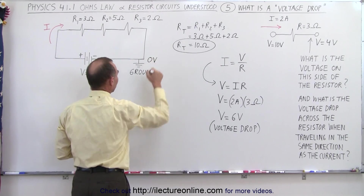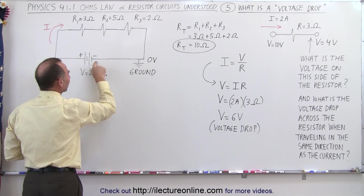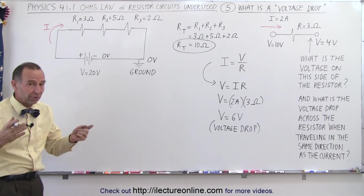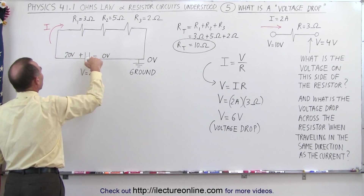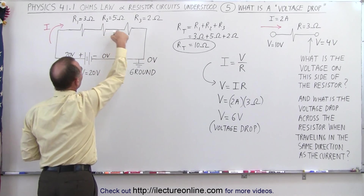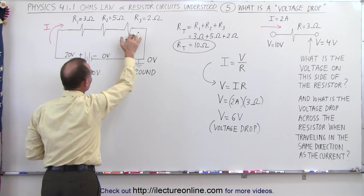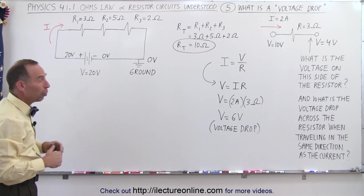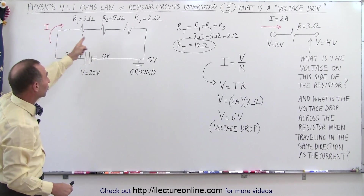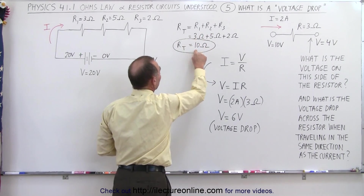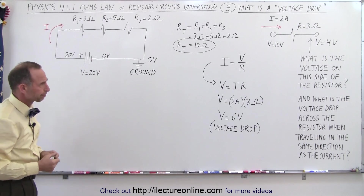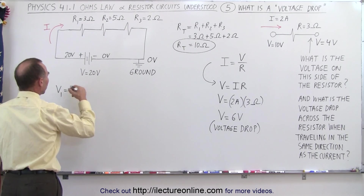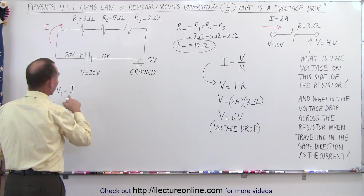The circuit at this point is at 0 volts. Since this is a 20 volt battery and the right side is connected to ground at 0 volts, the left side of the battery will be at 20 volts. As current flows through the three resistors, there will be a voltage drop across each one and by the time we get back to ground the voltage should be zero. The equivalent resistance of three resistors in series is found by adding them, giving us 10 ohms. The voltage drop across the first resistor, V1, equals I times R1.